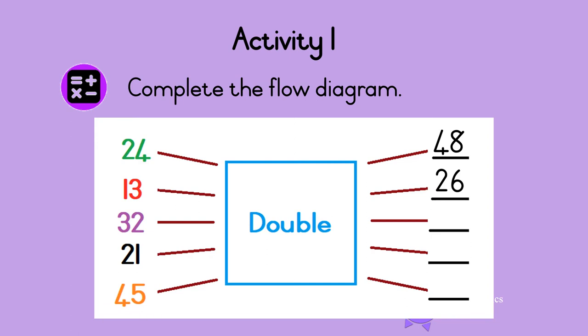What is double 32? First double the first digit. Double 3 is 6. Then double the second digit. Double 2 is 4. So double 32 is 64.